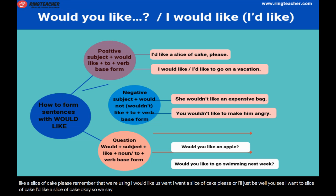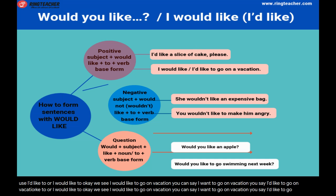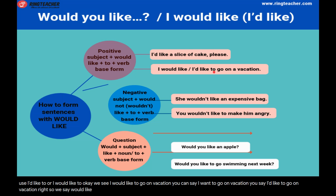We can also use 'would like' with a verb. In this case, we use 'I'd like to' or 'I would like to.' For example: 'I would like to go on vacation' — instead of 'I want to go on vacation,' you say 'I'd like to go on vacation.' So the structure is: would + like + to + base form.